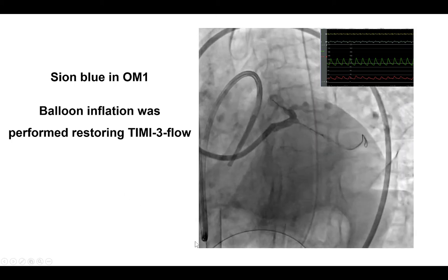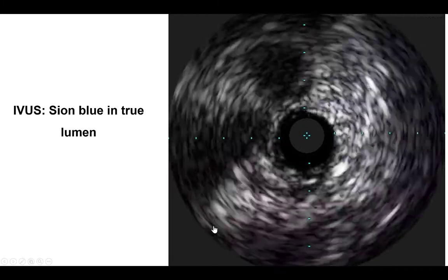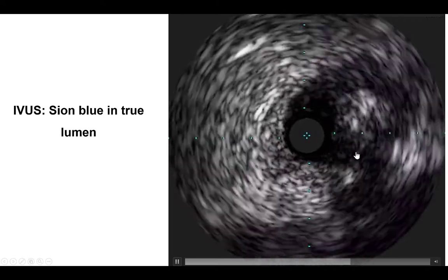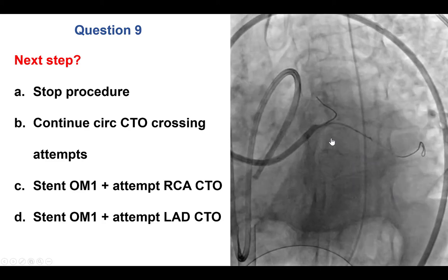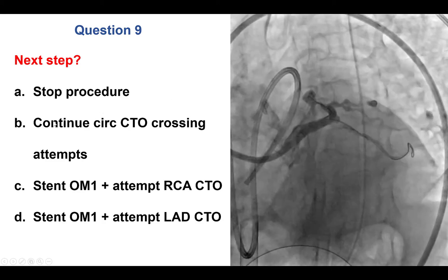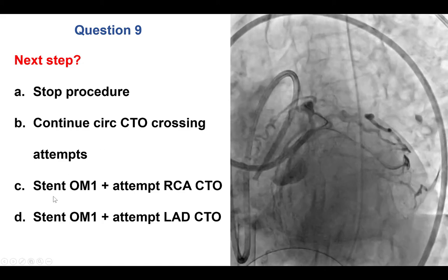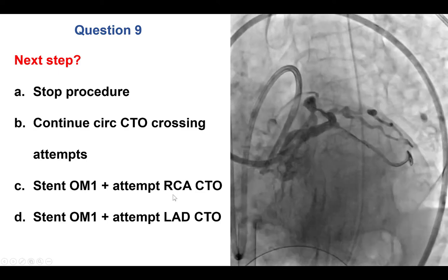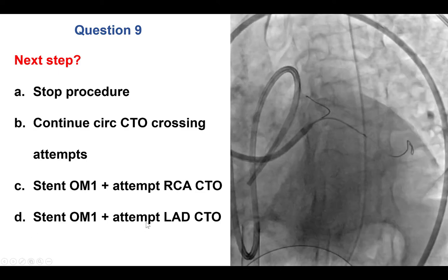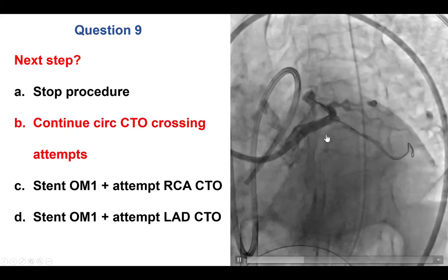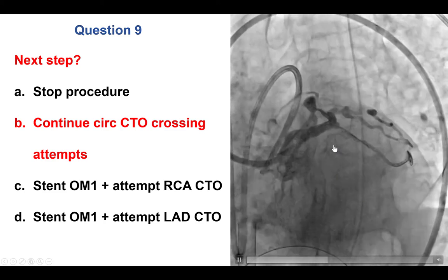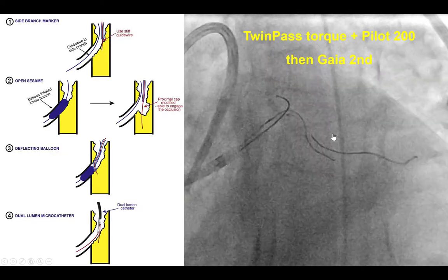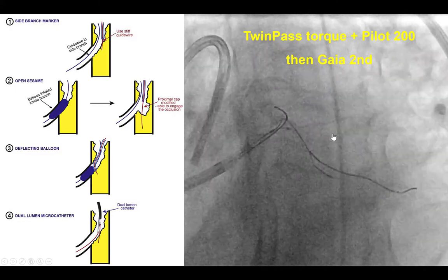True lumen position was confirmed with intravascular ultrasound showing the proximal cap with plaque and some calcification. The decision for next steps — stop the procedure, continue circumflex crossing, stent the OM and go to the right, or stent the OM and go to the LAD — favored attempting to cross the circumflex CTO, since stenting the circumflex could decrease the chance of crossing the CTO in the future. The plan was to proceed with circumflex CTO crossing as originally planned.